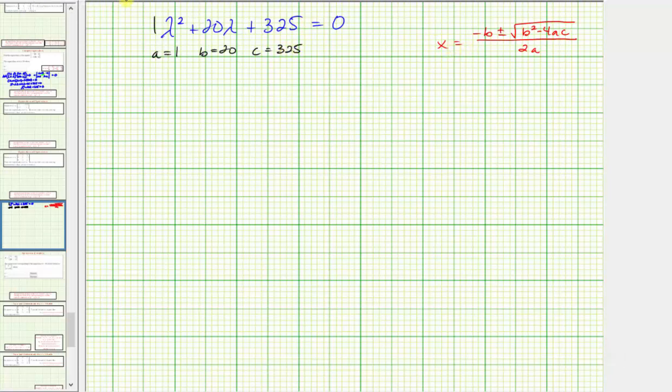So of course instead of x we'll have lambda. So lambda equals negative b, which is negative 20, plus or minus the square root of b squared, that's 20 squared, minus four times a, which is one, times c, which is 325, all divided by two times a, which is two times one.